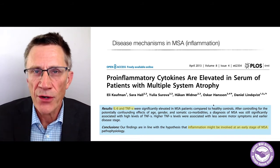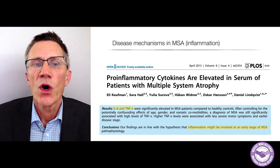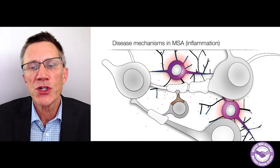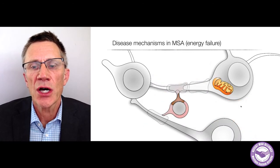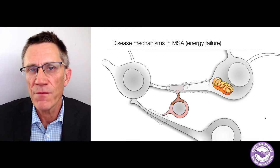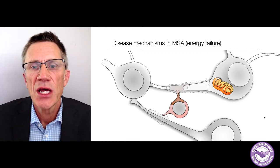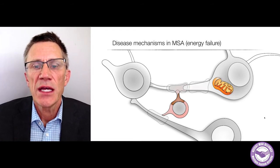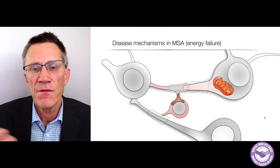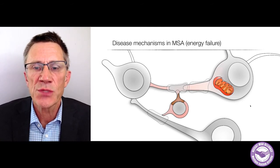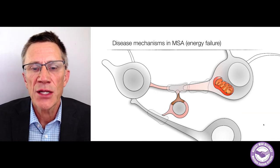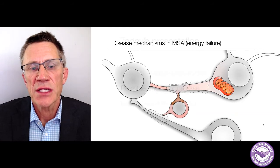So protein aggregates form, inflammation occurs — what else happens in MSA? The mitochondria, the yellow cigar-shaped organelles inside cells that produce energy, also seem to be affected by the disease process, causing some degree of energy failure. As a result of all these events — protein aggregates, inflammation — the connections between nerve cells are impaired, the myelin sheaths are destroyed, and eventually the cells die.